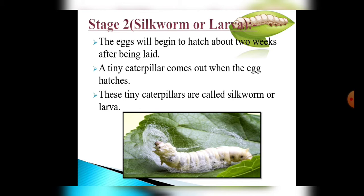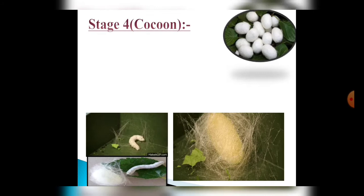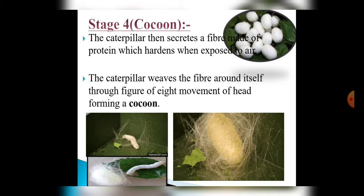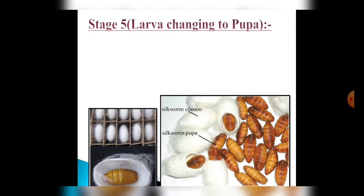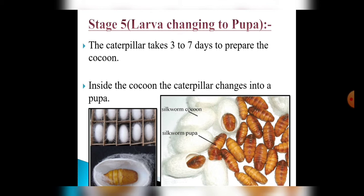In stage 3, these caterpillars start feeding on leaves and grow bigger within 3 to 4 weeks. In stage 4, the caterpillar forms a big fiber cocoon. In stage 5, the caterpillar takes three to seven days to prepare the cocoon, and inside the cocoon the caterpillar changes into a pupa.